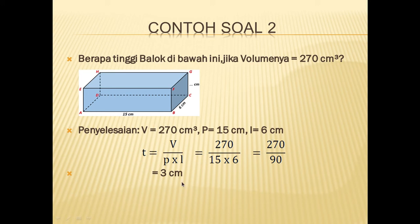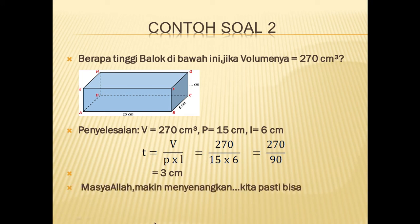Luar biasa ya. Materi ini sangat mudah. Sangat mudah untuk menghitung unsur yang belum diketahui dari balok. Langkah pertama, tuliskan terlebih dahulu apa yang diketahui. Langkah kedua, tuliskan rumusnya. Langkah ketiga, masukkan angka-angkanya, kemudian kalian hitung, ketemulah hasilnya. Untuk contoh soal yang kedua ini bisa kalian pahami dengan baik? Alhamdulillah, terima kasih ya.